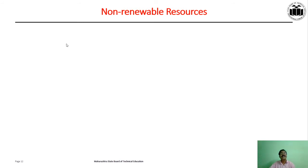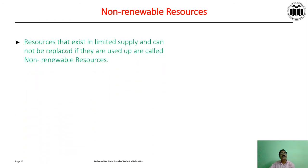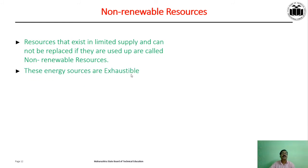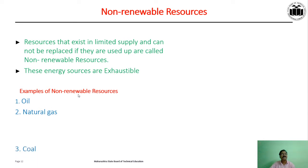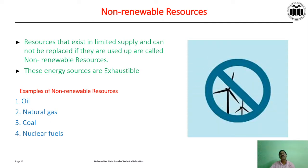Non-renewable resources: resources that exist in limited supply and cannot be replaced if used up are called non-renewable resources. These resources are exhaustible, and that is why they must be used carefully. Examples of non-renewable resources are nuclear fuel, oil, natural gas, and coal. These figures show the non-renewable resources.